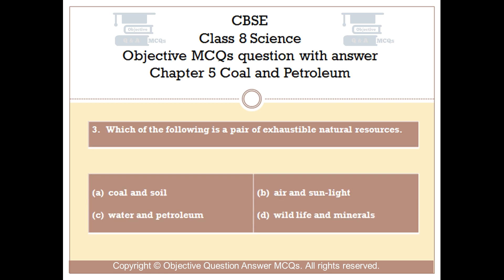Question number 3. Which of the following is a pair of exhaustible natural resources? Option A: Coal and Soil. Option B: Air and Sunlight. Option C: Water and Petroleum. Option D: Wildlife and Minerals.